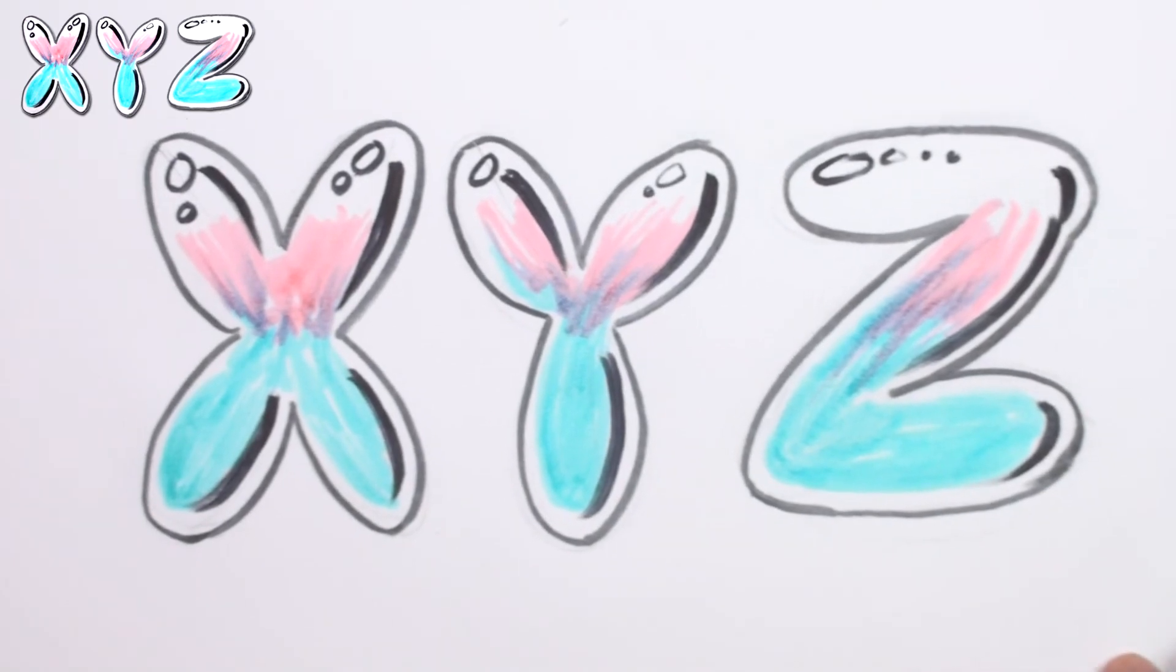And there we have the X, Y, and Z, which completes our letter series.